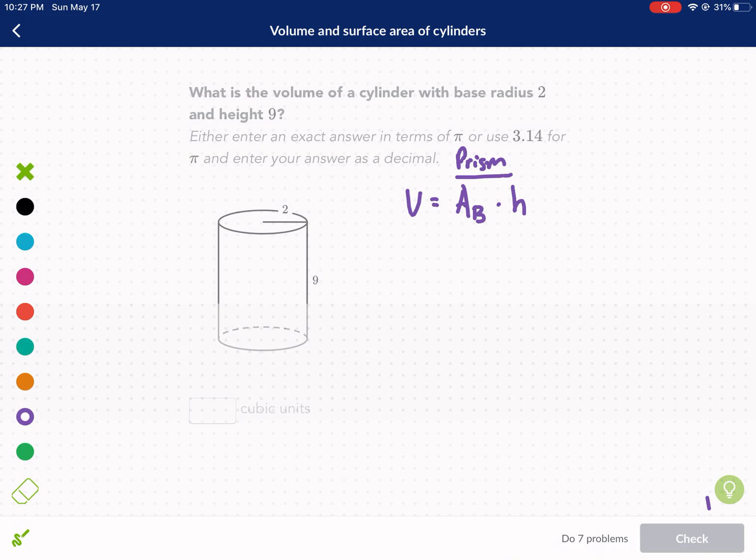Essentially what we're doing is you're taking the area of the circle and then you're pulling it all the way down this height, and that forms volume. So you're taking it into a third dimension, which is why units for volume are units cubed.